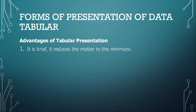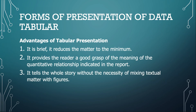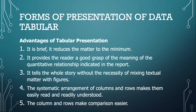Some important advantages of using tabular form include: it is brief and concise; it reduces matter to the minimum and highlights important parts; it provides a reader a good grasp of quantitative relationships; it tells the whole story without mixing textual matter with figures; and the systematic arrangement of columns and rows makes it easy to read, readily understood, and makes comparison easier.